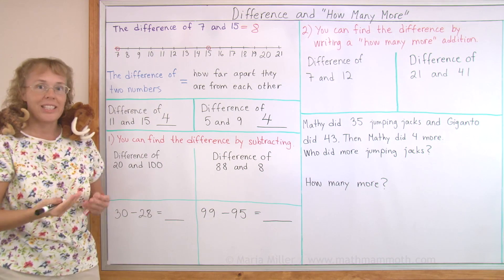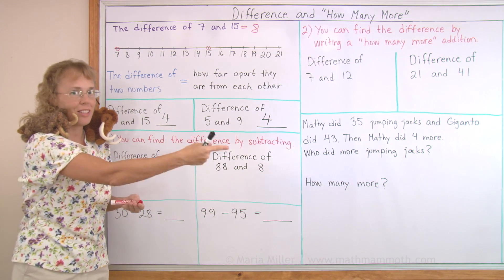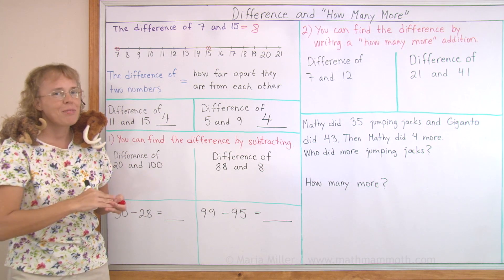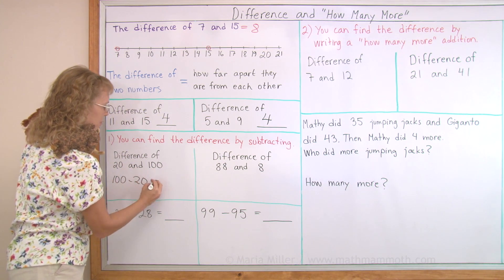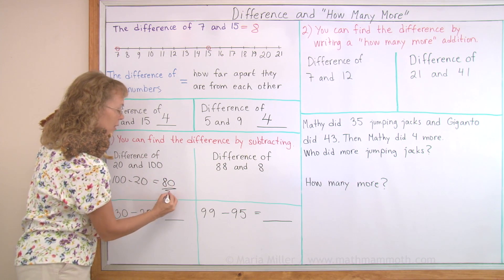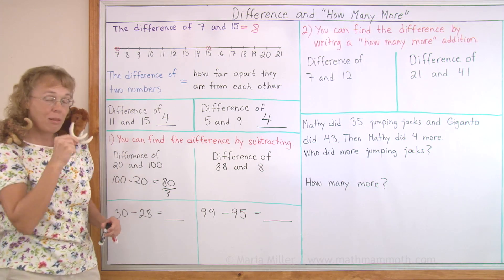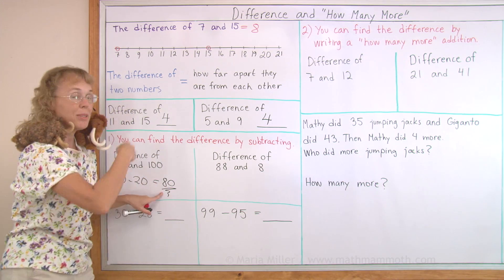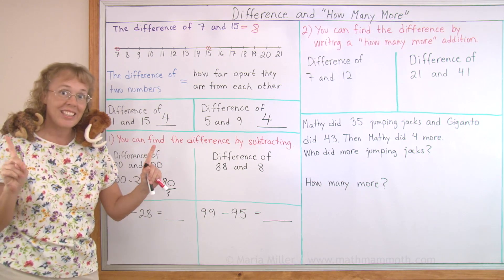So let's solve difference of 20 and 100. How many steps are there from 20 all the way to 100? That's quite many. I can subtract 100 minus 20 which is 80. So there are 80 steps. And you can think of the addition too, like I'm at 20 on the number line, I take 80 steps and then I land at 100. So they are 80 steps apart.